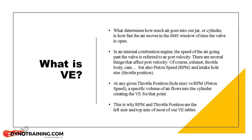There are several things that affect VE: exhaust system, throttle body size, heads, and cams. These things we call hard parts and are generally already installed when we put the bike on the dyno to calibrate the air tables. Things that we actually control on the dyno that affect VE are engine RPM and throttle position.